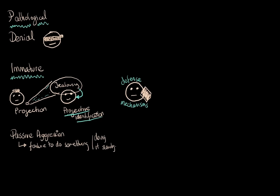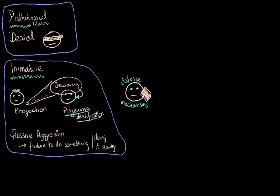So as we can see so far, we've outlined one pathological defense mechanism, denial, and two immature defense mechanisms. And this is by no means comprehensive. There are many more defense mechanisms, but I'm picking out the most important ones.